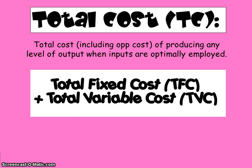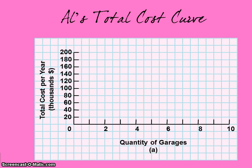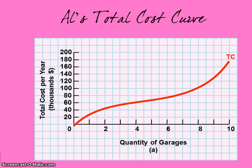The way you calculate total cost is you just add together your fixed and variable costs of production at a certain level of output. Total cost will continue to increase as you produce more and more units of output in the short run. This is Al's total cost curve for garages — he manufactures or builds garages. You can see that the more garages he builds, the more it costs, because the more garages you build, the more materials you need and the more workers you have to hire.